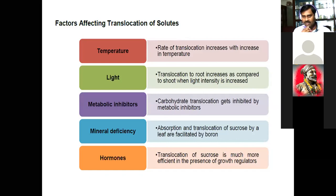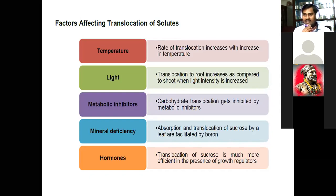Light increases the activity of photosynthesis, and because of that translocation to root increases compared to shoot when light intensity increases. This is because most of the shoot is involved in photosynthesis, so food moves mostly to the root. When light is not available — such as in cloudy conditions — less photosynthesis takes place, so food moves less to the root and mostly to the branches and leaves where it is needed.